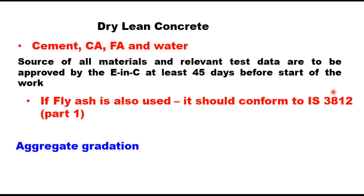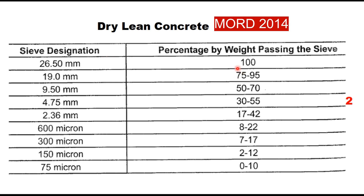The constituents of any concrete — whether dry lean, well compacted, or PQC — are the same: cement, coarse aggregate, fine aggregate, and water. All these materials must be checked for their quality as per relevant IS code before the start of work. Sources of all materials and relevant test data are to be approved by the engineer in charge at least 45 days before start of work. If fly ash is to be used, it should conform to IS 3812 Part 1. When coarse aggregate and fine aggregate are mixed, the aggregate gradation for dry lean concrete should satisfy the specified requirement, with maximum aggregate size of 26.5 mm as per MORTH specification.